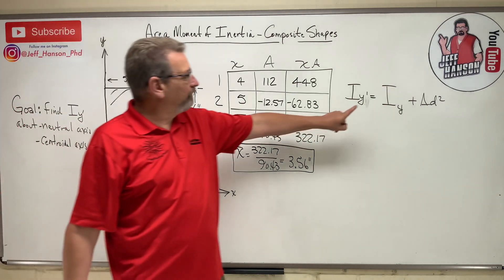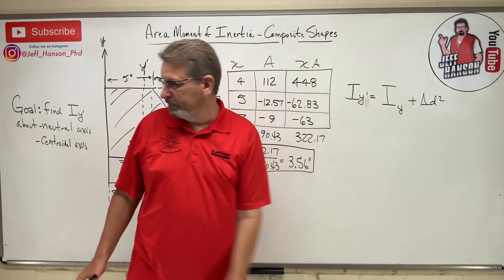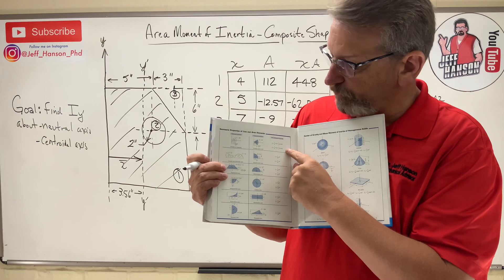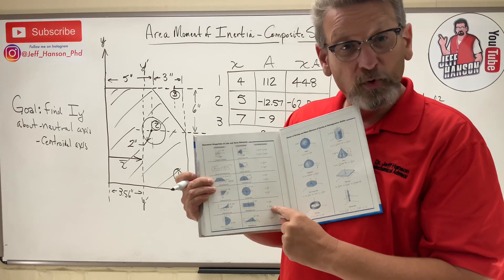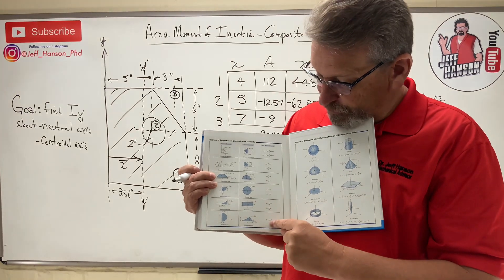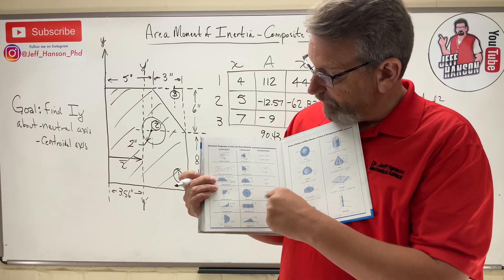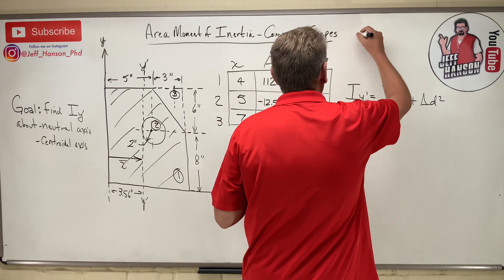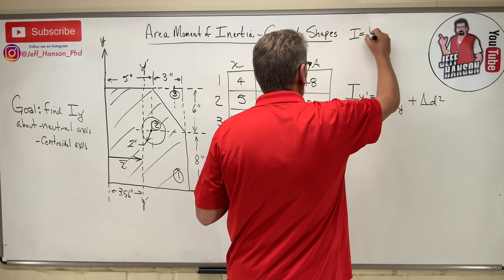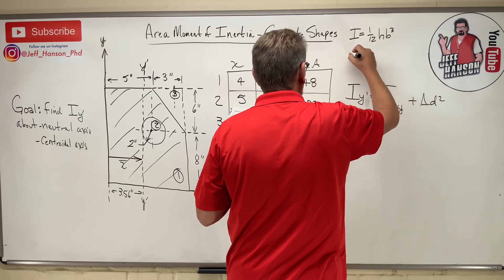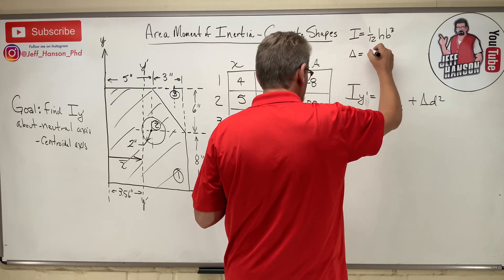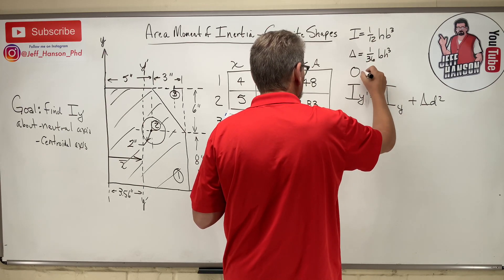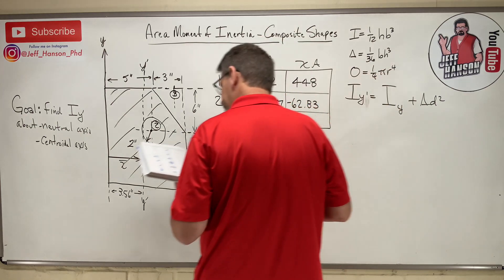All we need to do is find what goes in each part of that formula. Looking at our centroid table for the three shapes: the rectangle is (1/12)·h·b³, the triangle is (1/36)·b·h³, and the circle is (1/4)·π·r⁴. Let me write those up so we know them: rectangle is 1/12·h·b³, triangle is 1/36·b·h³, circle is 1/4·π·r⁴.